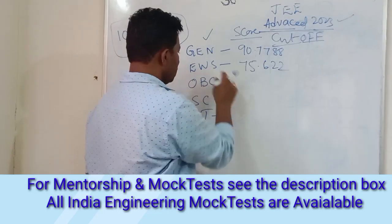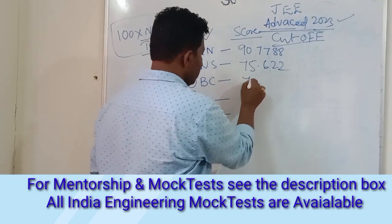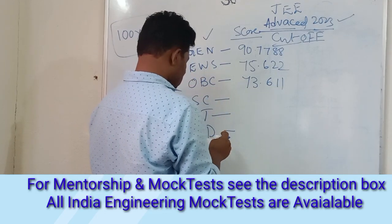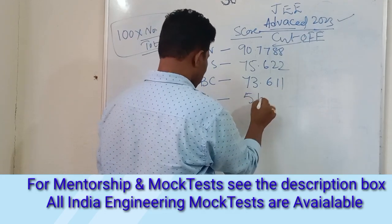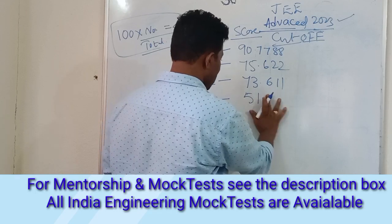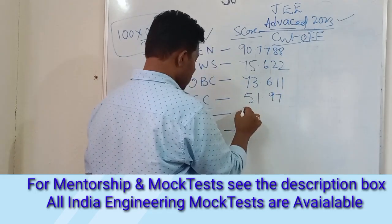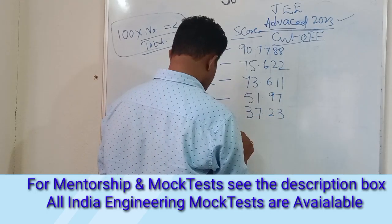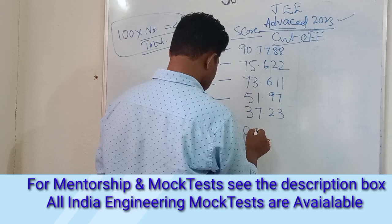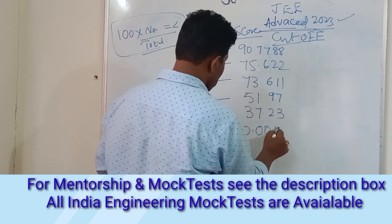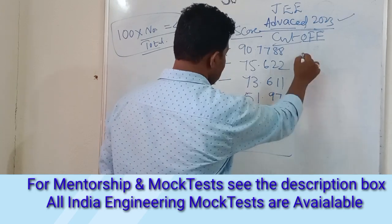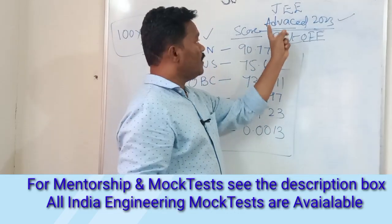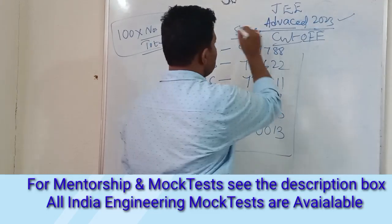OBC cutoff is 73.611, SC cutoff is 51.97, ST cutoff is 37.23, and PwD cutoff is 0.0013. These are the cutoffs for those who are going to appear in JEE Advanced.